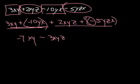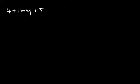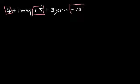Let's look at example 18.3: 4 plus 7MXY plus 5 plus 3YXM minus 15. I'll box the first one and see if there's anything similar. We have numbers here, here, and here — so we have three terms we can combine. And we have 7MXY and 3YXM with the same letters and same variables, so those will be combined too.